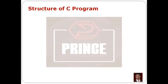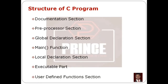When you want to print a C program, you will see the structure of the C program. The sections are: Documentation section, Pre-Processor section, Global Declaration section, Main Function, Local Declaration section, Executable Part, and finally User Defined Function section.